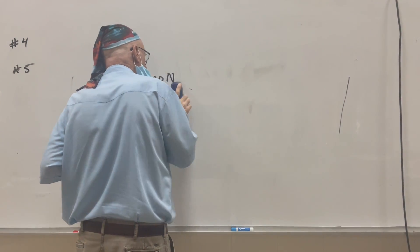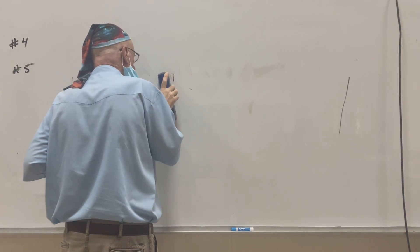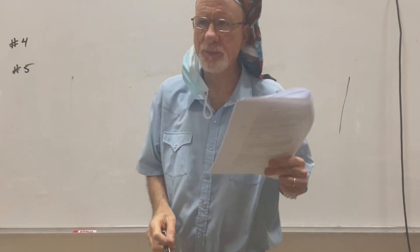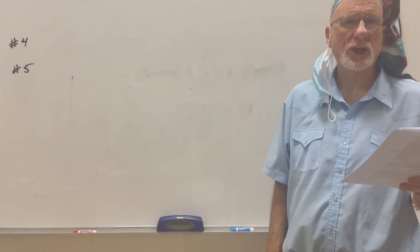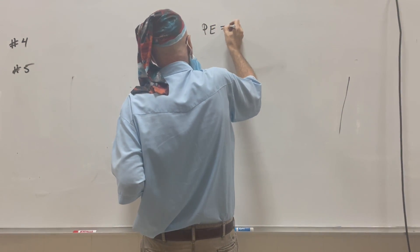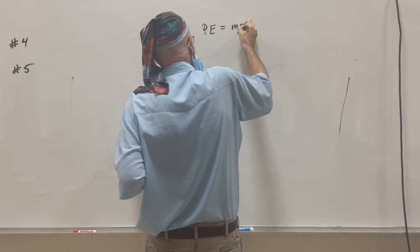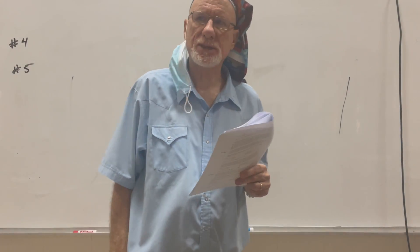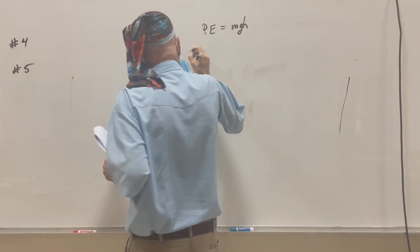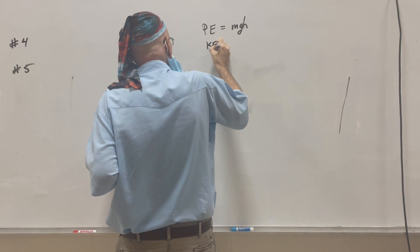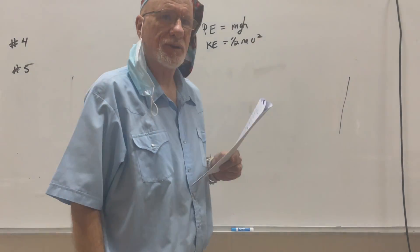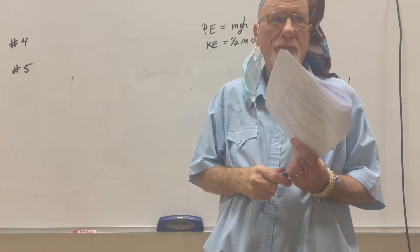There are two formulas that are given for this section. We're doing potential energy and kinetic energy. Potential energy equals mgh, mass times the acceleration due to gravity, times the height, correct? And then kinetic energy, which is 1/2 mv squared. 1/2 times the mass times the velocity squared. Clear? Okay.